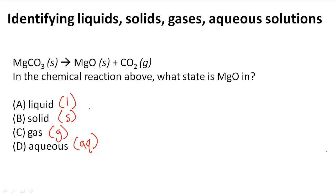Now, in this question it says: in the chemical reaction above, what state is MgO in? So they're going to ask us what state it is in, and we have to be able to identify it. S here indicates solid, and G indicates gas.